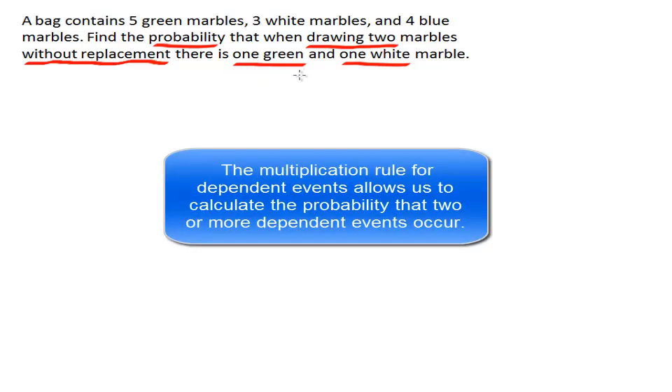We're looking for the probability that these two marbles turn out so that one of them is green and one of them is white. So let's write a probability statement to help solve the problem. We're going to have probability that we end up with one green marble and one white marble. If we have two marbles being drawn, we would have two spaces to fill in the appropriate probabilities.